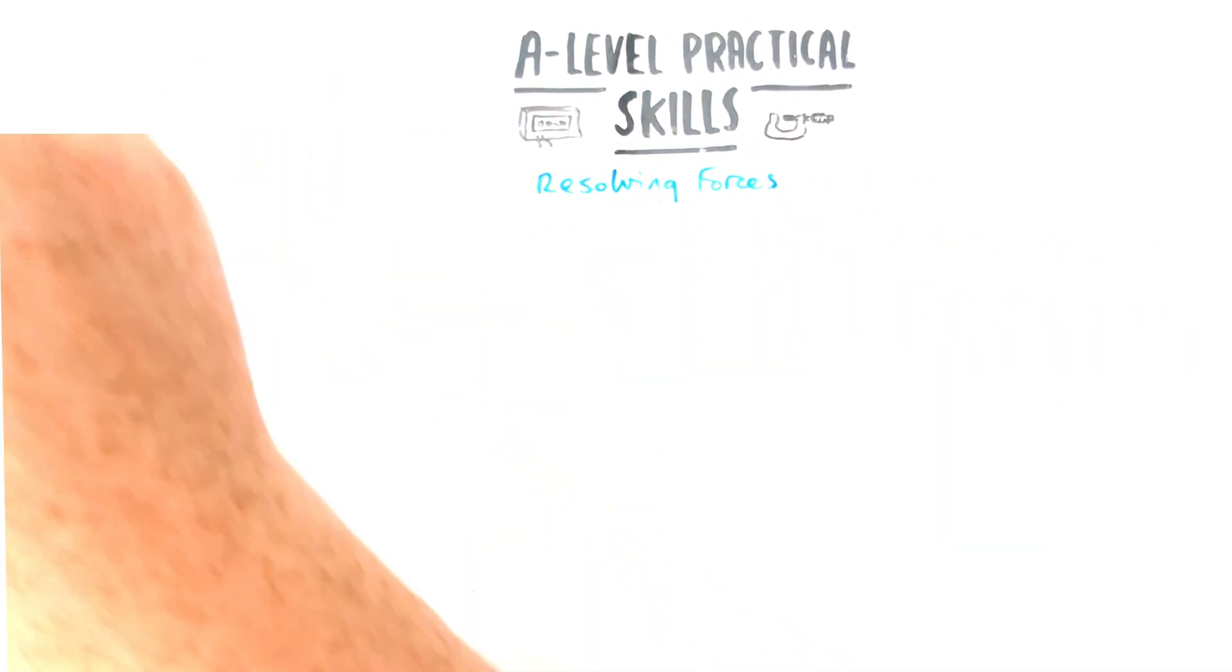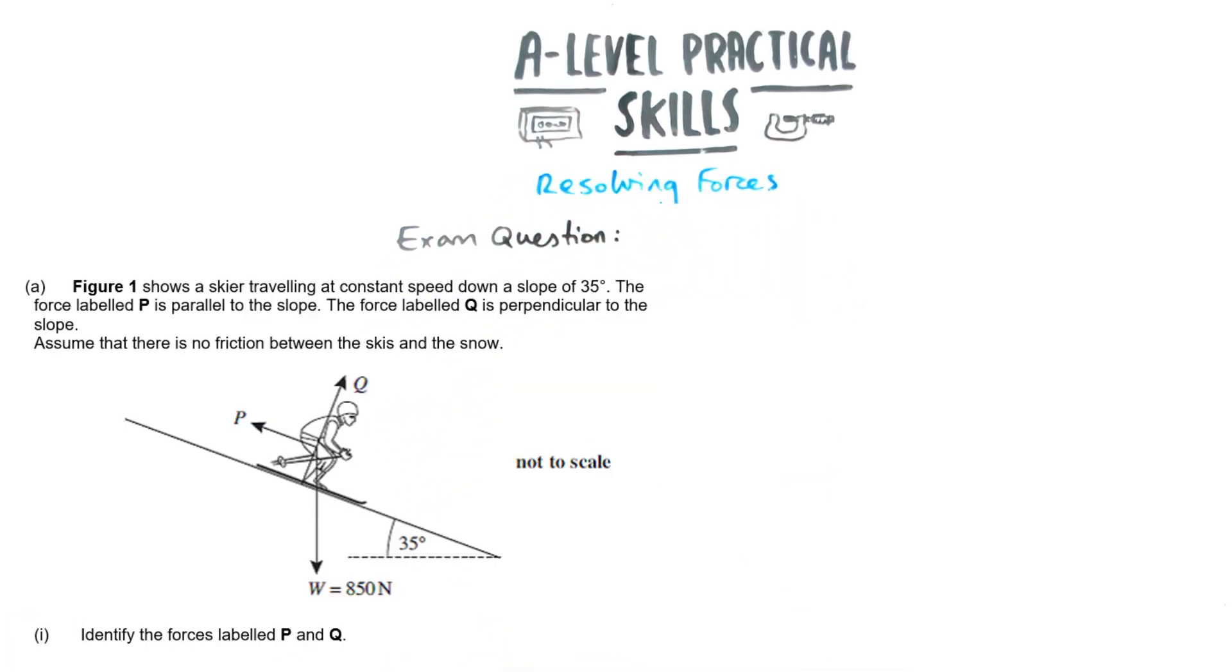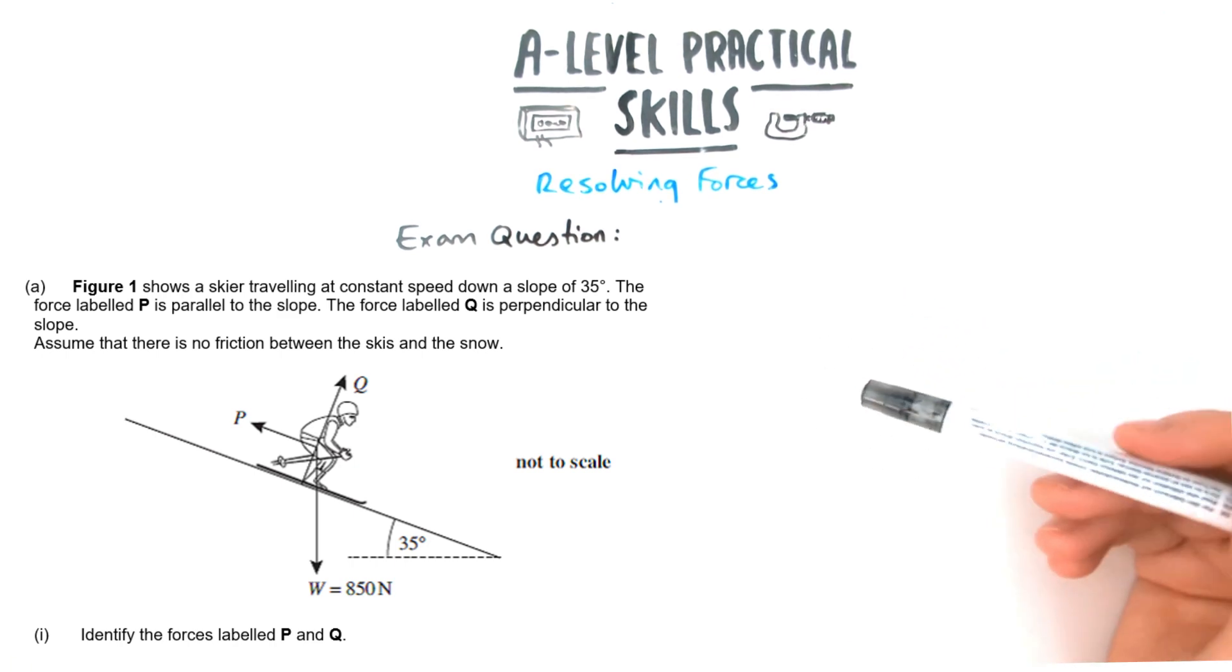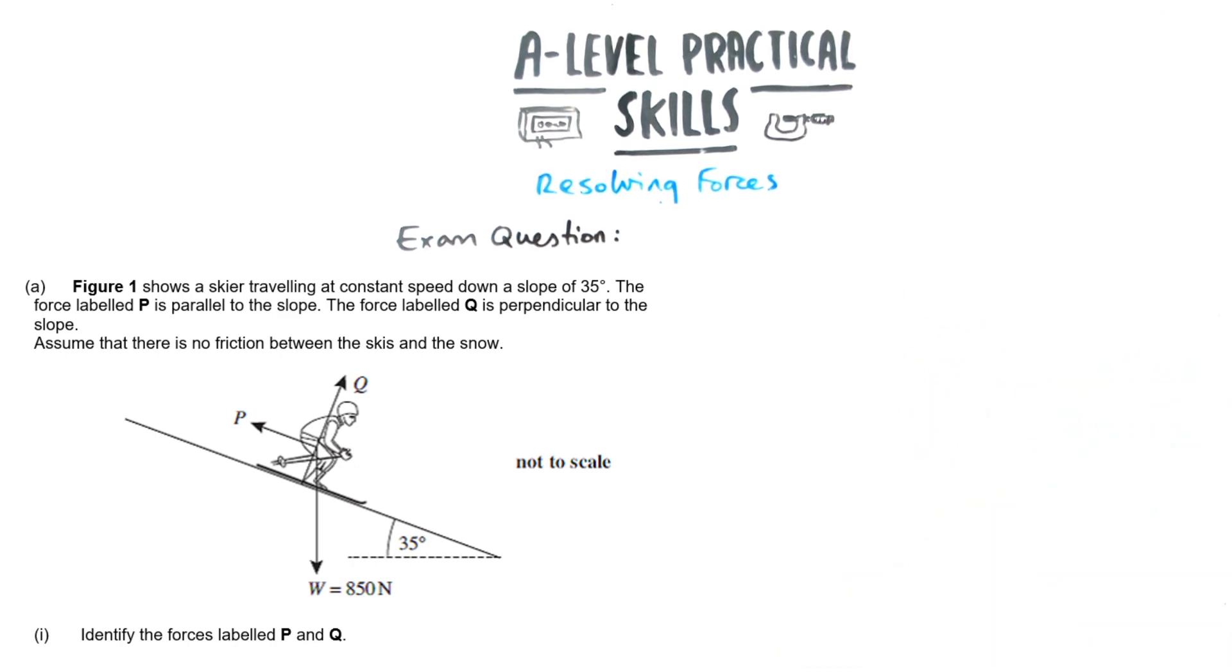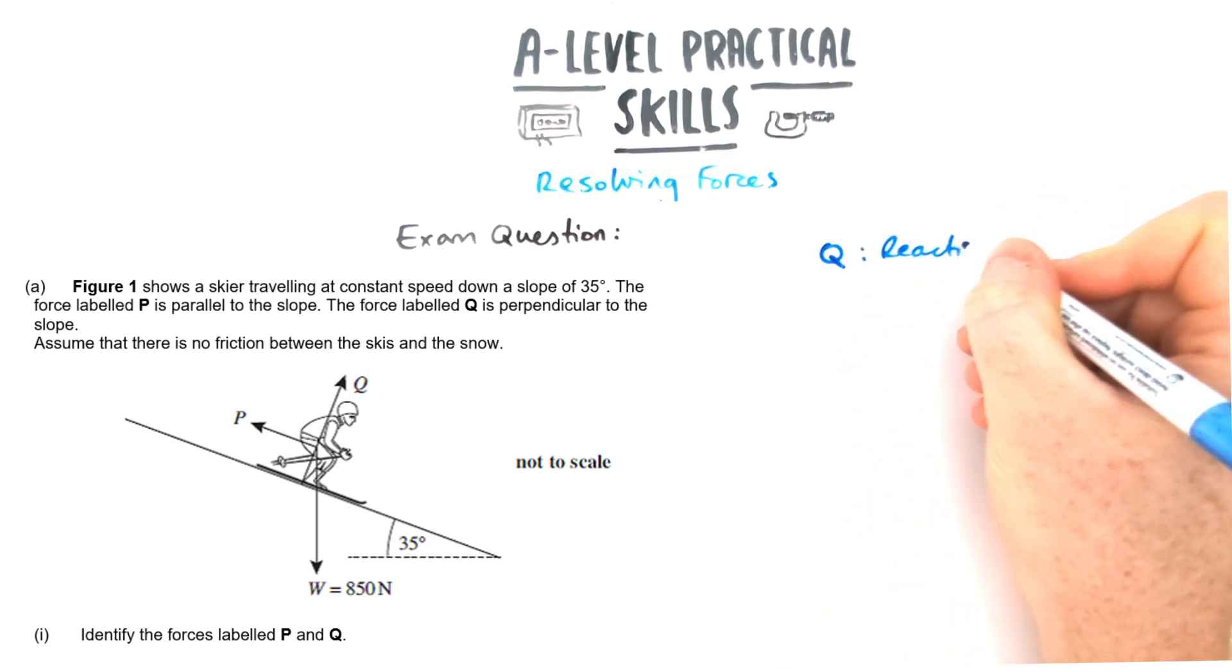The final question we're going to have a go at is an exam question. Have a look at the diagram on the screen. This time we've got a skier. A skier is going to be moving at a constant velocity, which is really important when we talk about the forces.